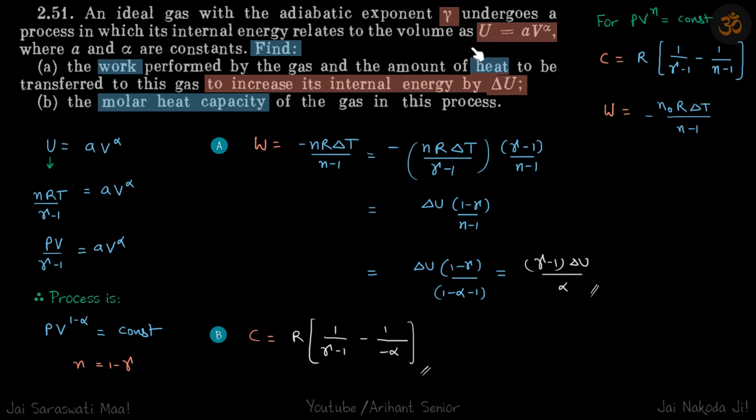We will write U in the form of temperature. Everything else is constant, so what we get here by simplifying is that PV raised to power 1 minus alpha is constant.